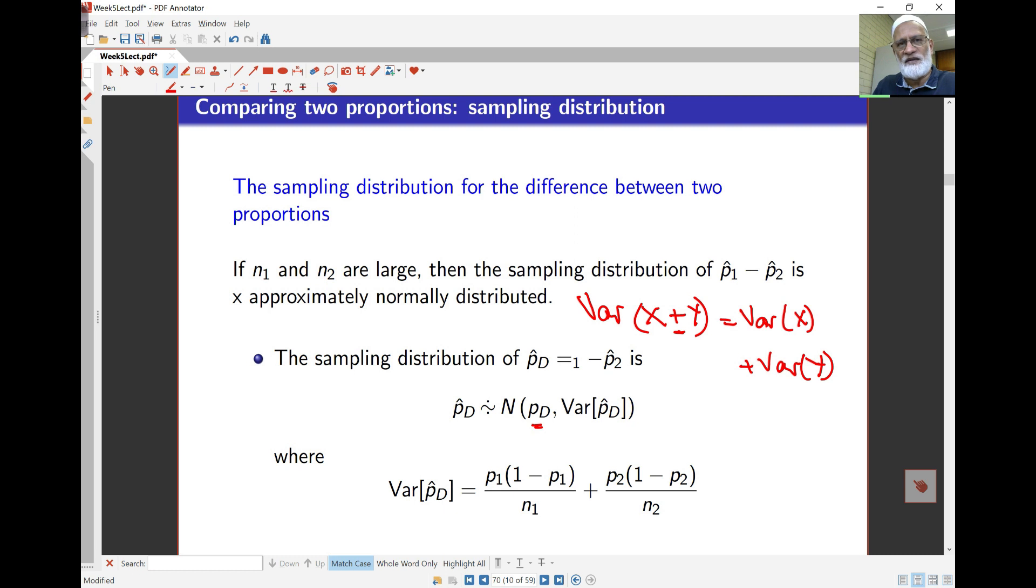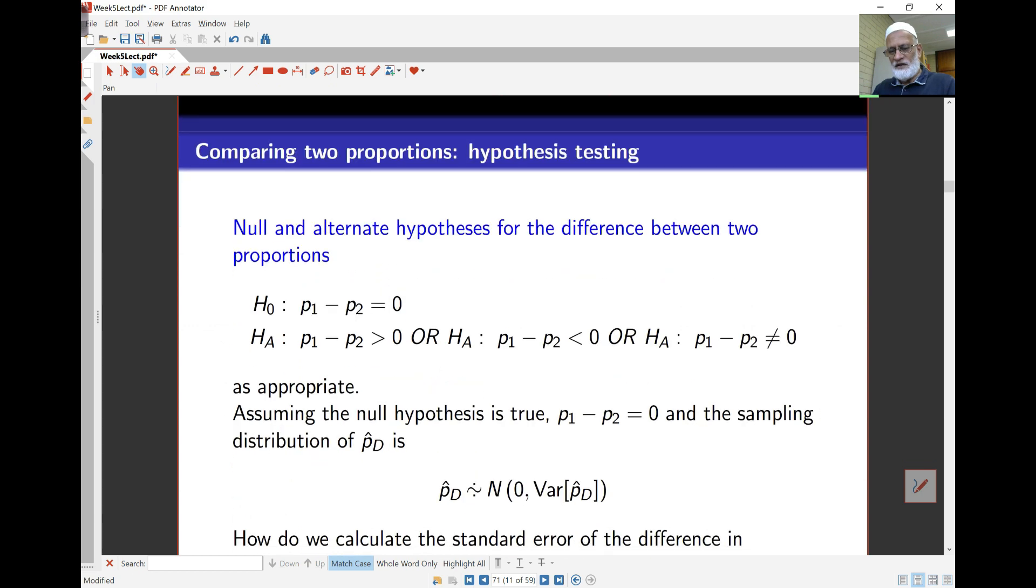Independence is such an important concept and important property here. If we have independence of x and y, the variance of x plus y is simply the variance of x plus variance of y. Interestingly, if I have a minus here as well, it doesn't change. Variance of x minus y is also variance of x plus variance of y in the case where x and y are independent. If they weren't independent, you'd have some covariance terms here as well. The variance of the difference p1 hat minus p2 hat is simply the variance of the first one plus the variance of the second one.